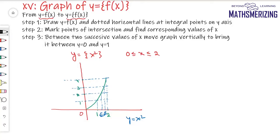Between two successive values of x, move the graph vertically to bring it between y = 0 and y = 1. The first piece already lies between 0 and 1, so I leave it. For each subsequent piece, I bring it down so it lies between 0 and 1. That's the graph of y = {x²}.